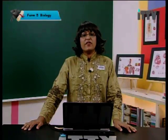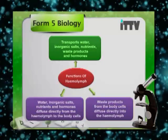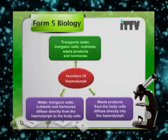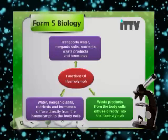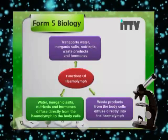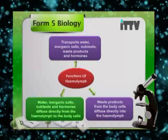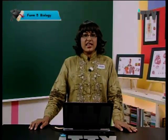The functions of haemolymph are very much like blood. Haemolymph functions to transport water, inorganic salts, nutrients, waste products, and hormones — just like blood in an advanced multicellular organism. However, the difference is that haemolymph is in direct contact with the cell body, so water, inorganic salts, nutrients, and hormones diffuse directly, and likewise waste products from the cells diffuse directly into the haemolymph. That concludes our lesson on the circulatory system, covering the function of blood and the function of haemolymph in lower multicellular organisms such as arthropods.